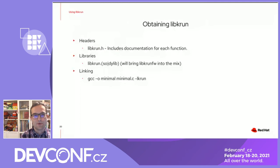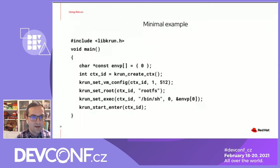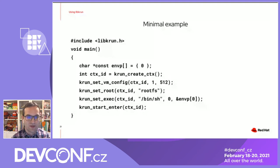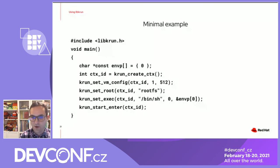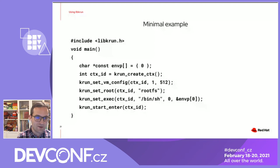This is a minimal example of using LibKRun in under 10 lines of code. This will create a VM with just one vCPU and 512 megabytes of RAM, using rootfs as the root file system, and /bin/sh as the command to be executed inside the VM as the entry point, with no arguments and an empty environment. Of course, I don't expect anyone to use LibKRun this way because we are ignoring any kind of error codes, but I still think it's a nice way to illustrate how easy it can be to create a VM using LibKRun.